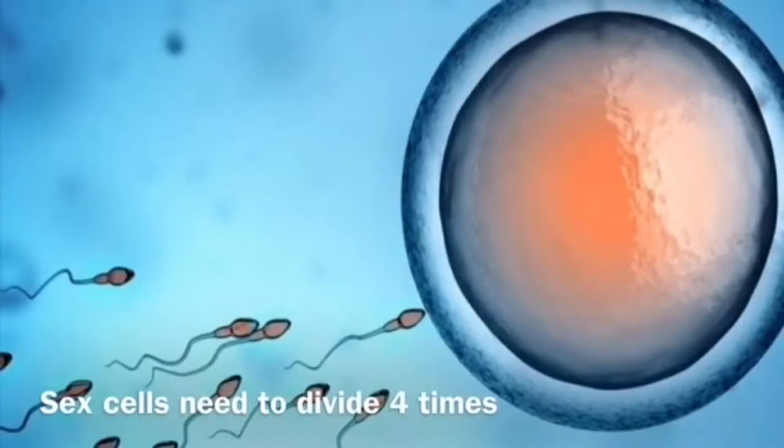In interphase there are three stages: G1, S, and G2. In G1 the cell grows in size. In S phase, the cell duplicates DNA in organisms. G2 is where the cell duplicates centrals and prepares for division.